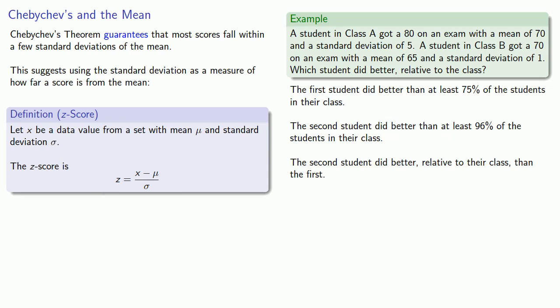And one way to look at this is the numerator, x minus the mean, tells you how far away from the mean the value is. When we divide by the standard deviation, we get that distance in terms of the standard deviation.